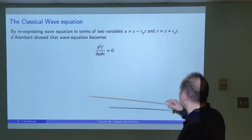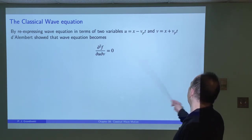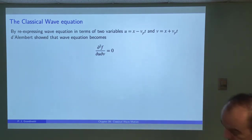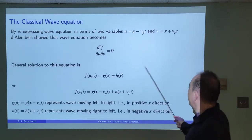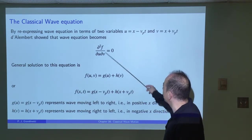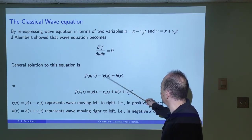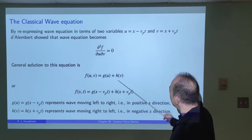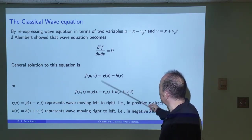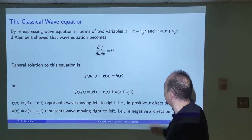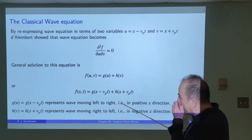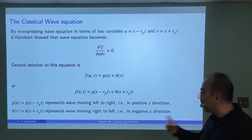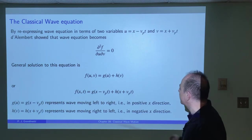D'Alembert realized that by defining variables for left-moving and right-moving waves — u = x − vp·t and v = x + vp·t — he could rewrite the wave equation in a very simple form. The solution can be written as the sum of two parts: g(u) plus h(v), where g is a function of u and h is a function of v. Substituting this in and taking partial derivatives with respect to u and v both go to zero, yielding the result. So any solution to the wave equation can be written as a combination of a left-to-right moving wave and a right-to-left moving wave.